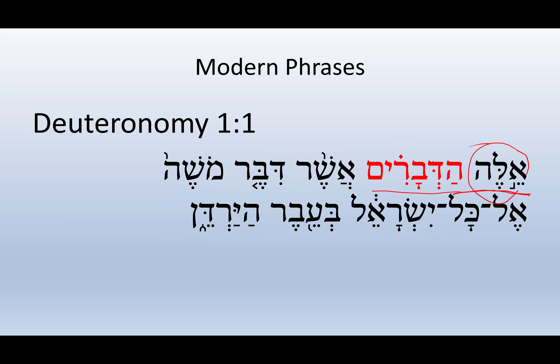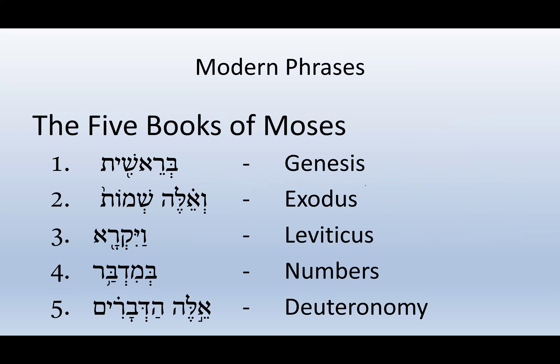We're going to be studying about Ele — 'these' — and you'll notice I inserted the word 'are.' 'These are the words.' We'll be looking at why in this lesson. So the five books: Bereshit is Genesis; Ele Shemot — 'these are the names' — is Exodus, or just Shemot; Vayikra — 'and he called' — is Leviticus; HaMidbar — 'in the wilderness' — is Numbers; and Ele HaDevarim, or just Devarim, is Deuteronomy. We'll see in this lesson why I added 'are.'